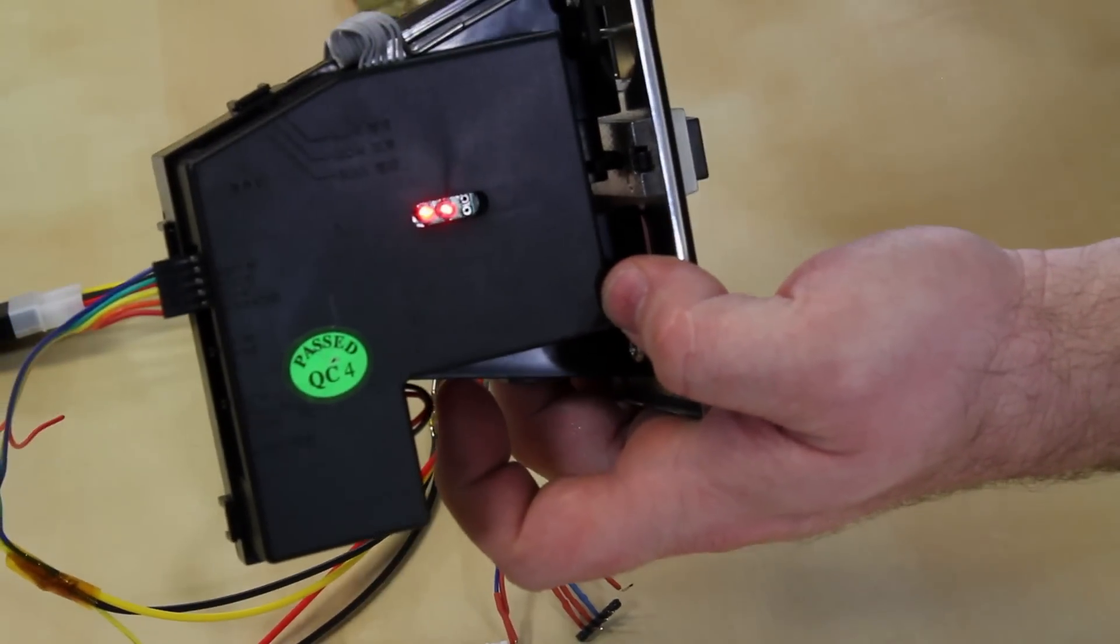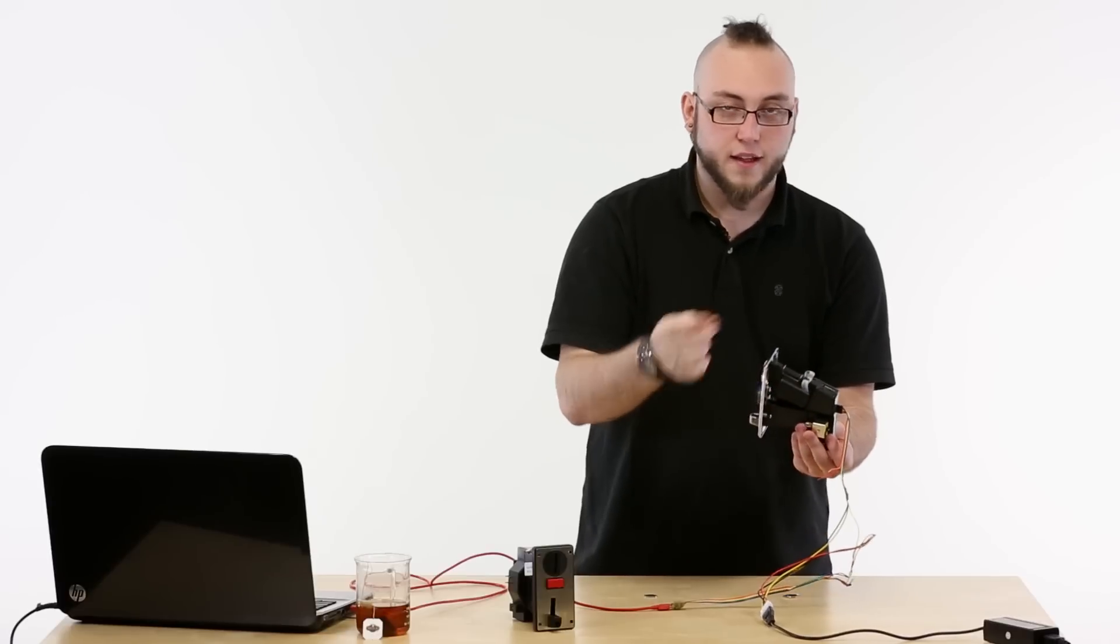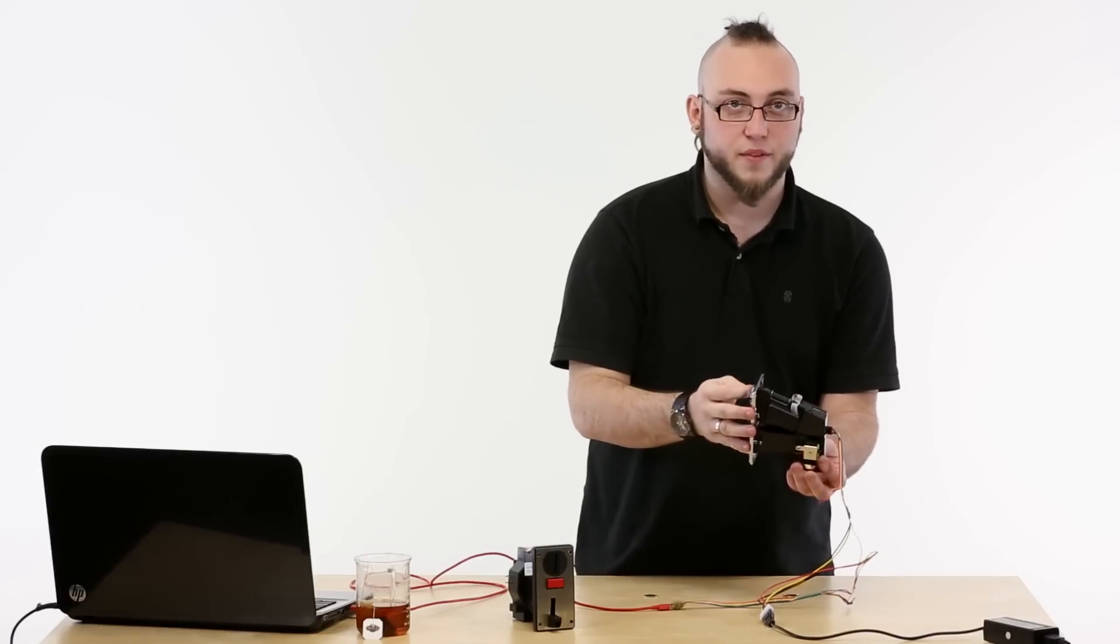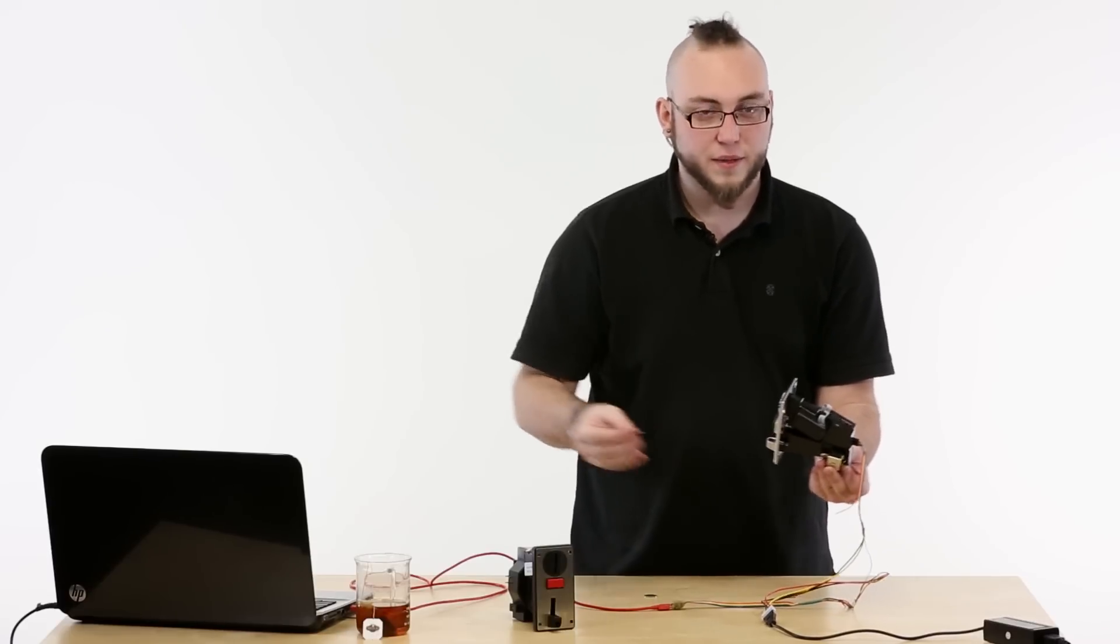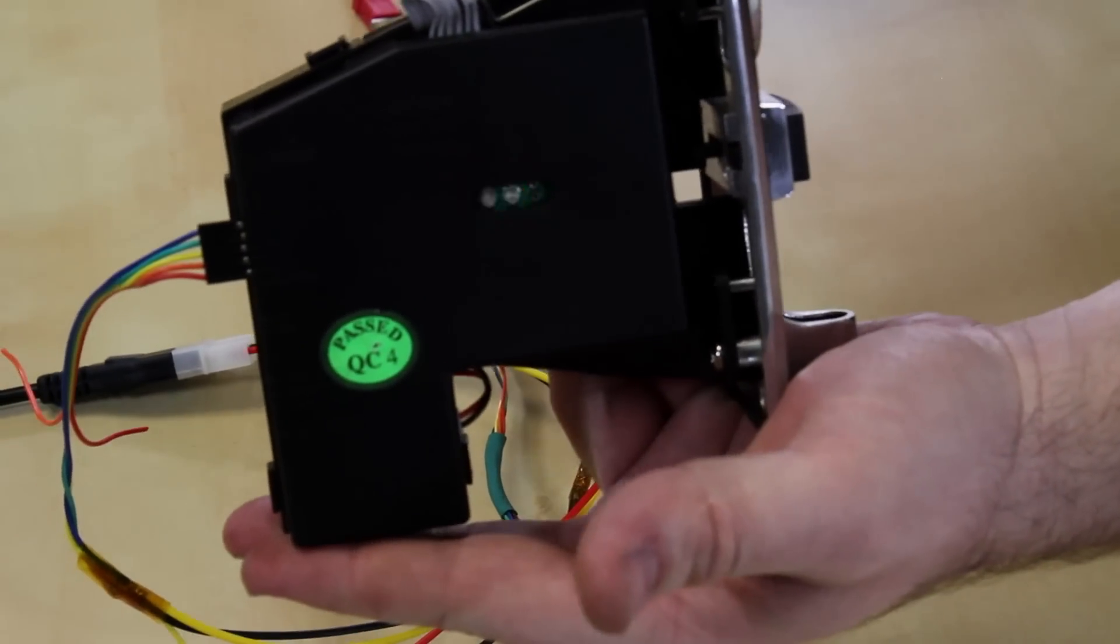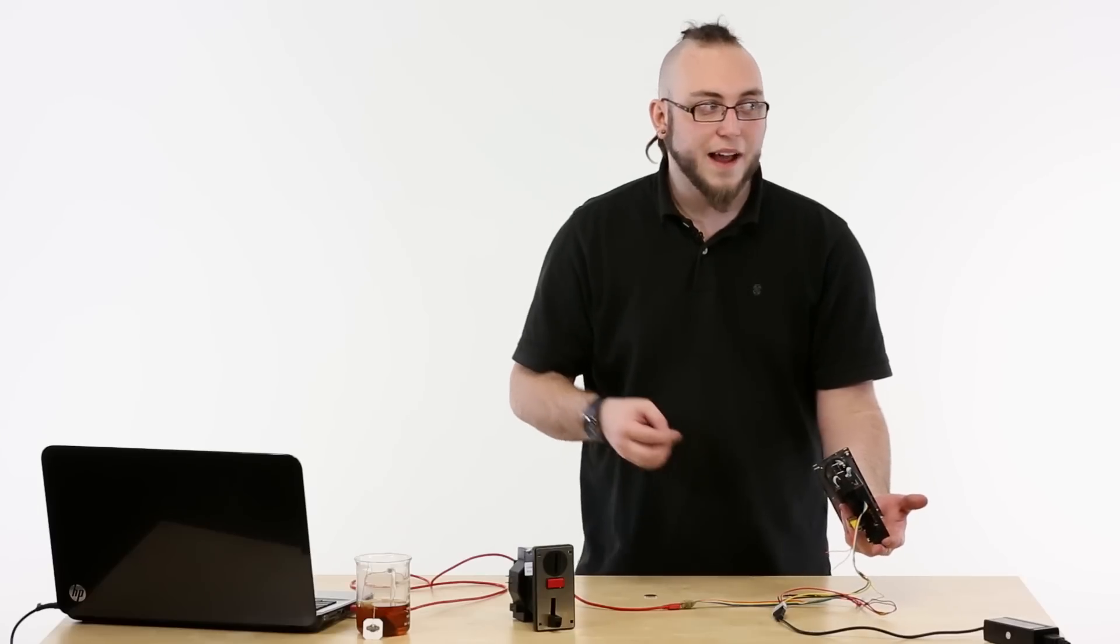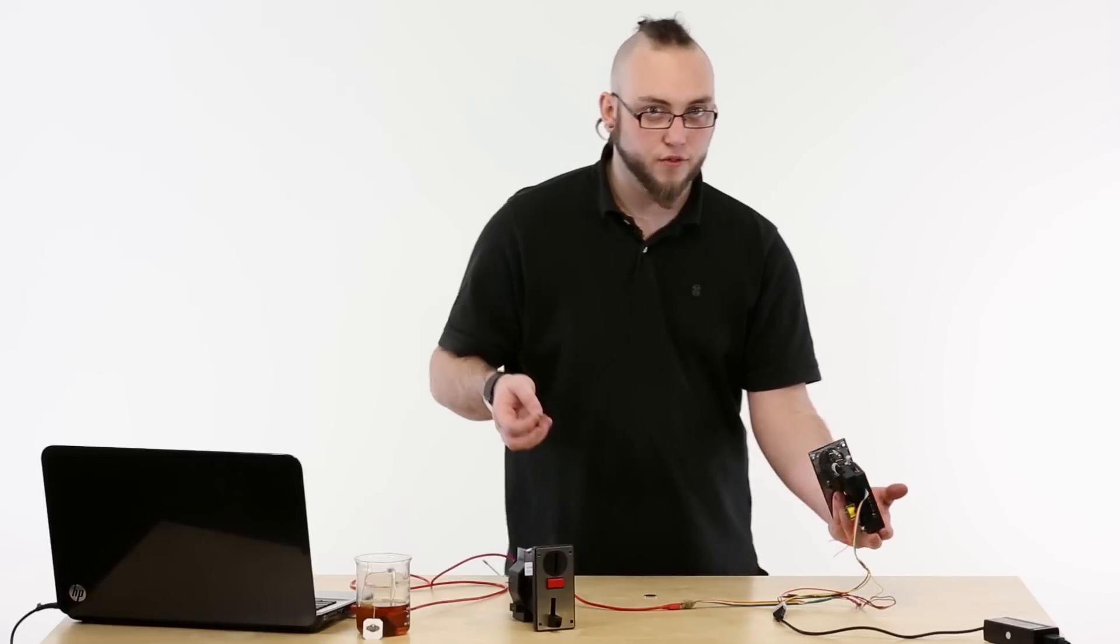And now the second LED is blinking which means it's ready to accept coin parameters for our second coin. Again just go ahead and slot a dime in there about 20 times and that second LED will take off blinking like crazy. Now you can see both LEDs are blinking which means that it's accepted the coin parameters for both coins and it's now ready to recognize the coins as you drop them through.